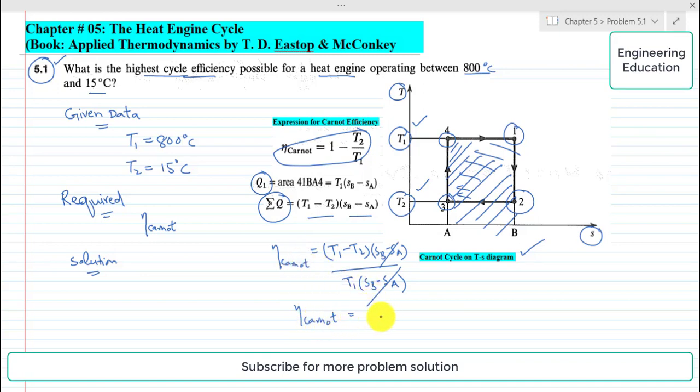And if we simplify this we get the expression for Carnot cycle efficiency and that is T1 minus T2 over T1. So if we further simplify this we will get 1 minus T2 by T1. So this is the highest cycle efficiency which is called Carnot cycle efficiency expression.